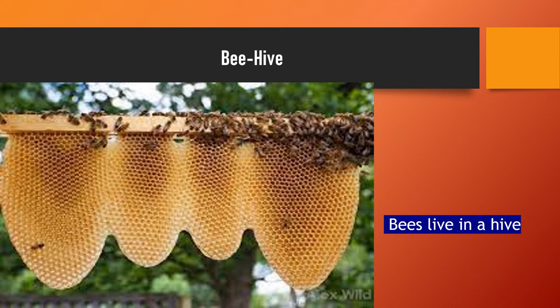Here we can see a beehive. So where do bees live? Bees live in a hive. As we can see, many bees are there and the picture of a hive is also very clear. The home of a bee is called a hive. B-E-E, bee. And H-I-V-E, hive.